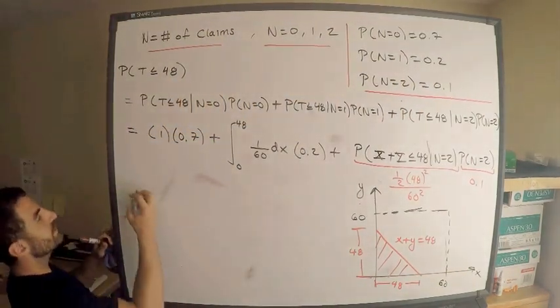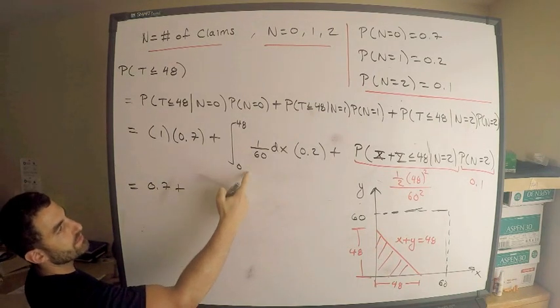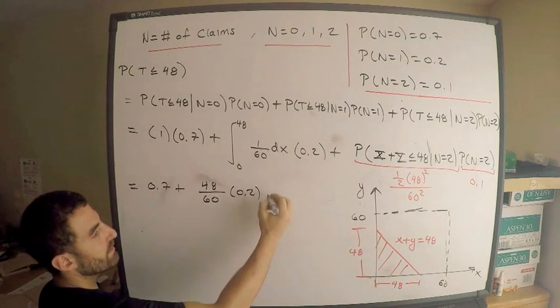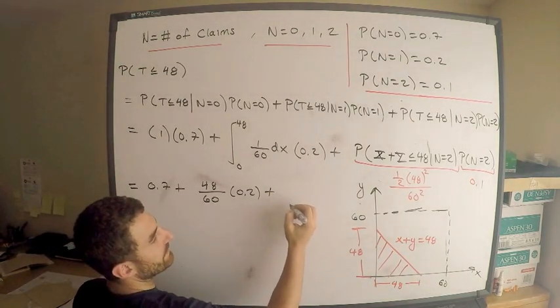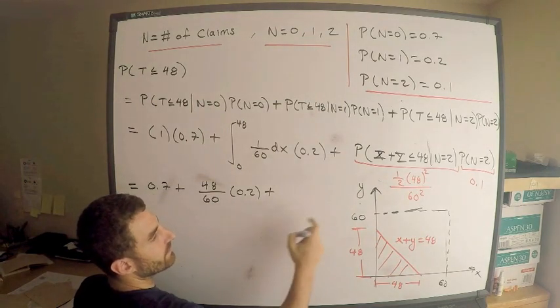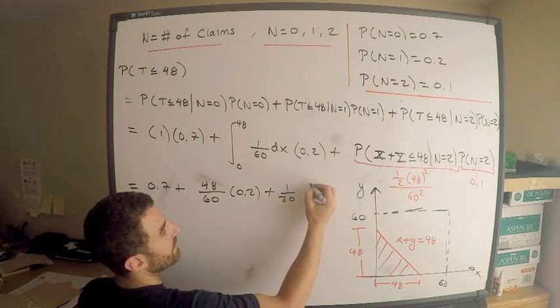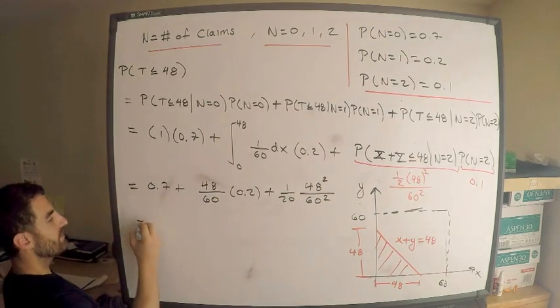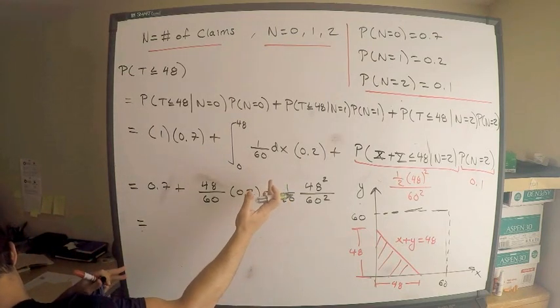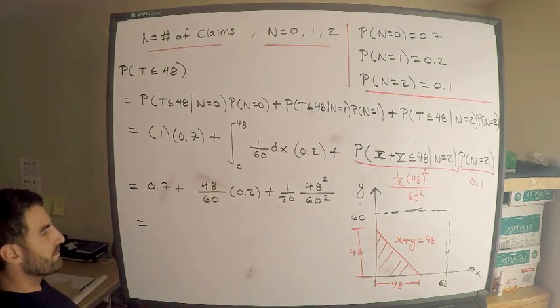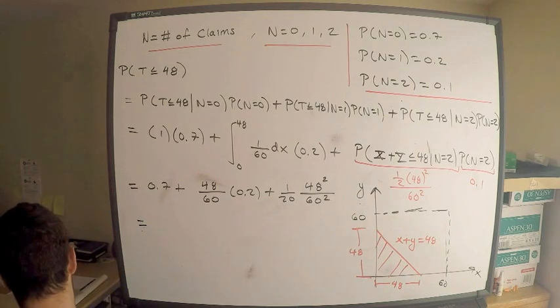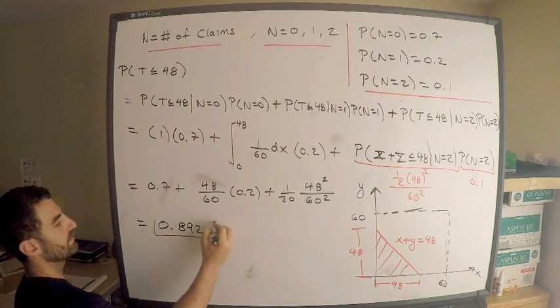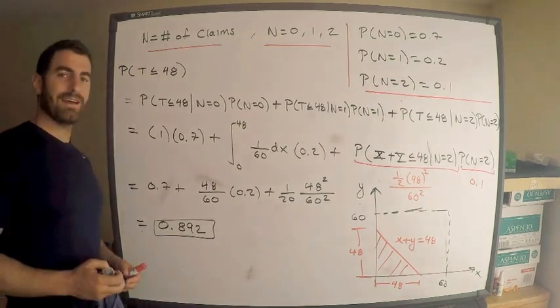We're good to go here. So this is equal to 0.7 plus this integral is easy peasy. This is 48 divided by 60 times 0.2. Over here, we're just doing one more here. This is going to be, let's just write it this way. This looks like 1 over 20 times 48 squared divided by 60 squared. This should give you, when you do this little computation, I cannot remember what you get. What do you get? You get 0.892. All right. That takes care of it. Tell me what you think. I hope this was helpful.